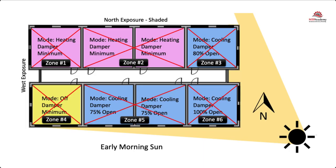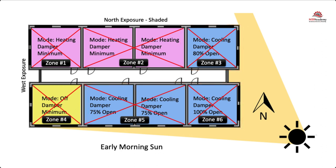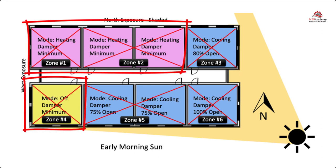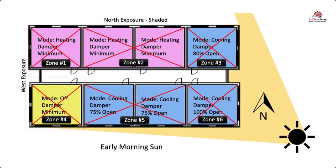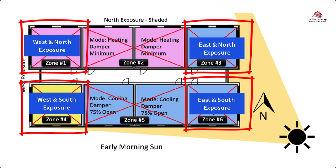Each zone is reacting differently to the early morning sun. Some zones are in cooling mode with their dampers at different percentages of being open, while other zones are in heating, and one zone is off and receiving minimum air for ventilation. This is a very basic diagram of how zones may differ and why it's important to consider how spaces are grouped together, as each space may have a different solar exposure and cooling load profile. Corner spaces are often difficult to include with other spaces because they have two exposures — it's like living on the corner of your block: you have two streets.